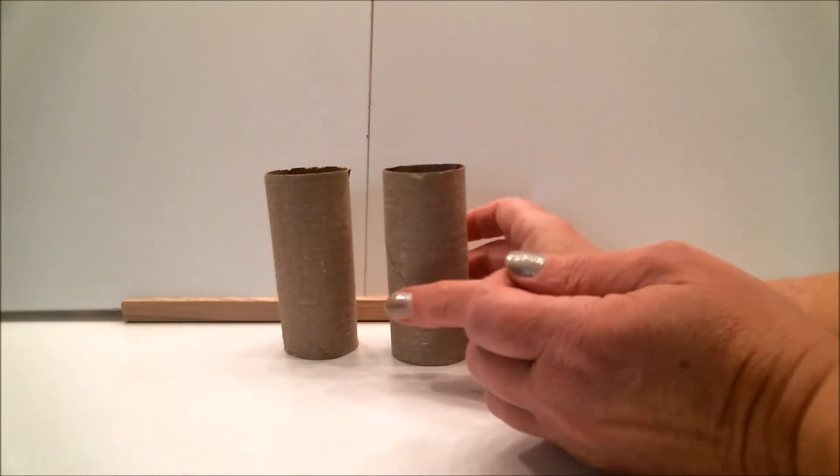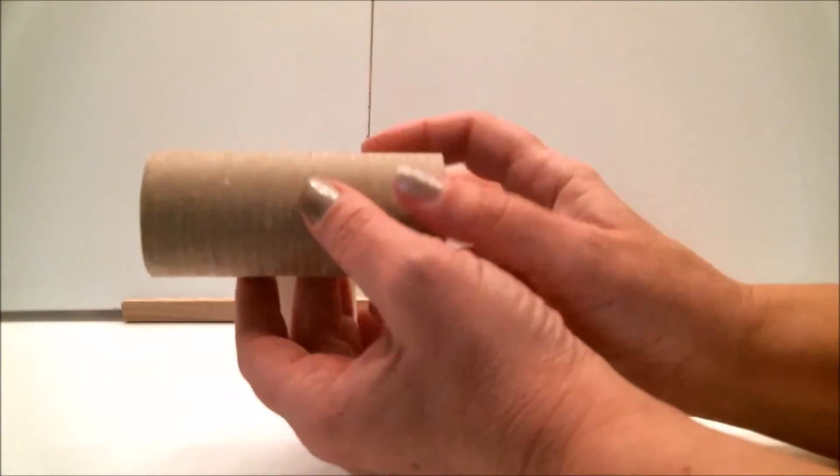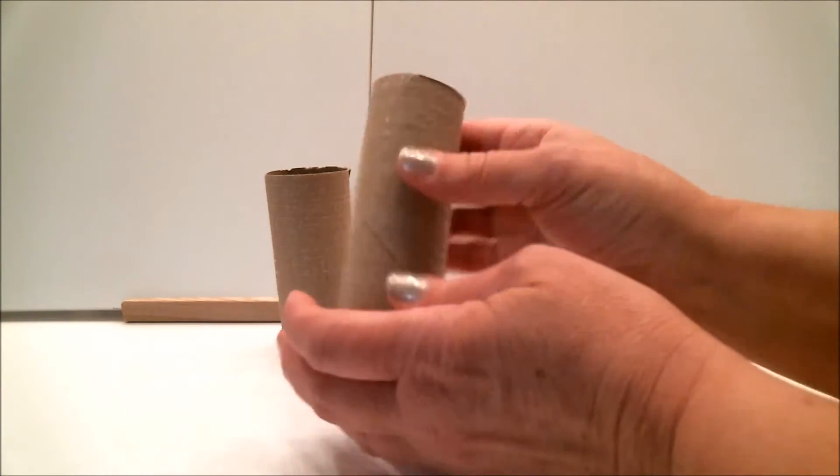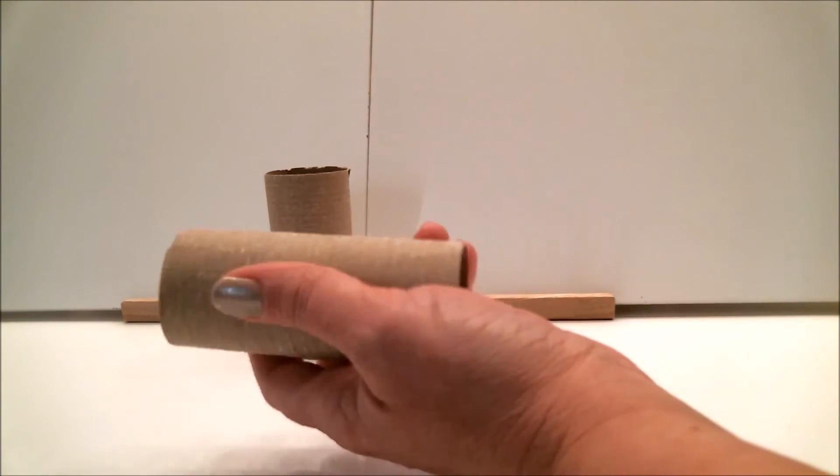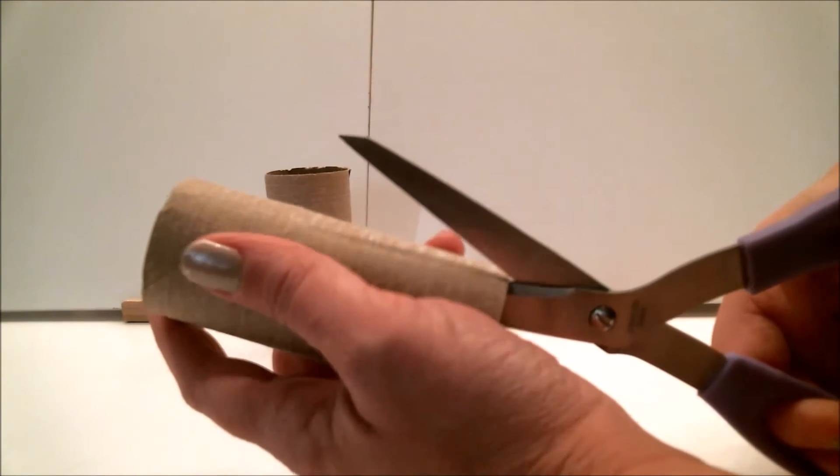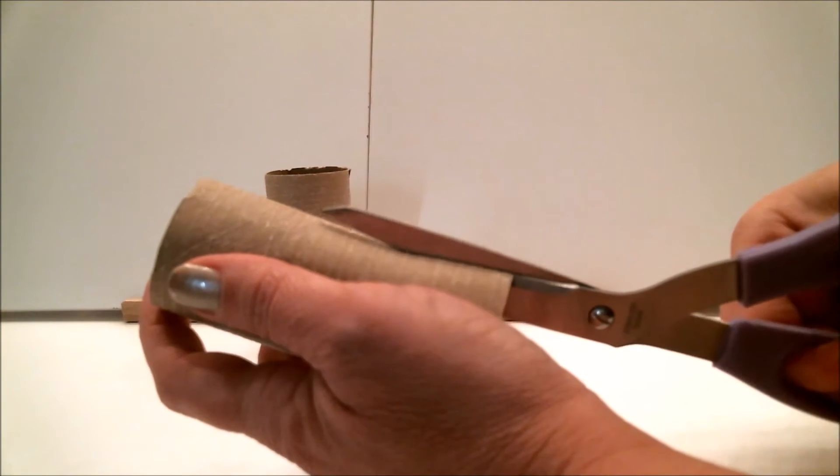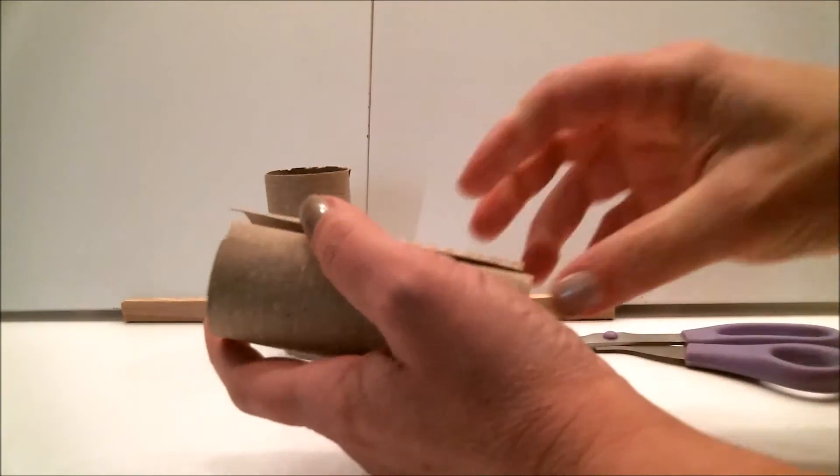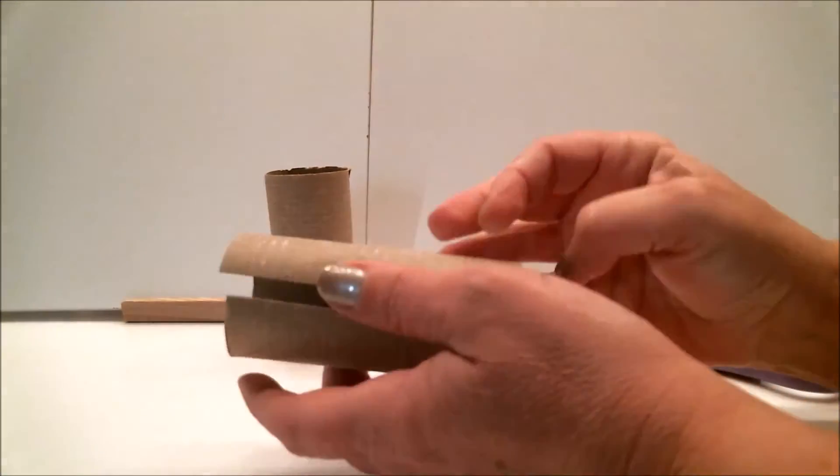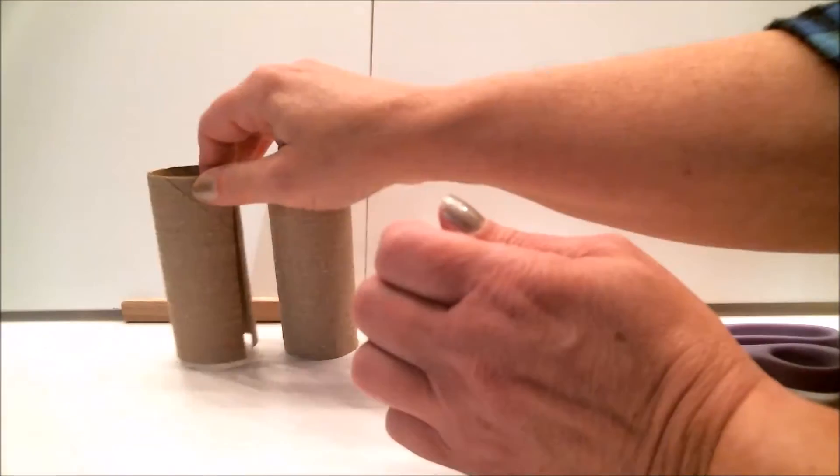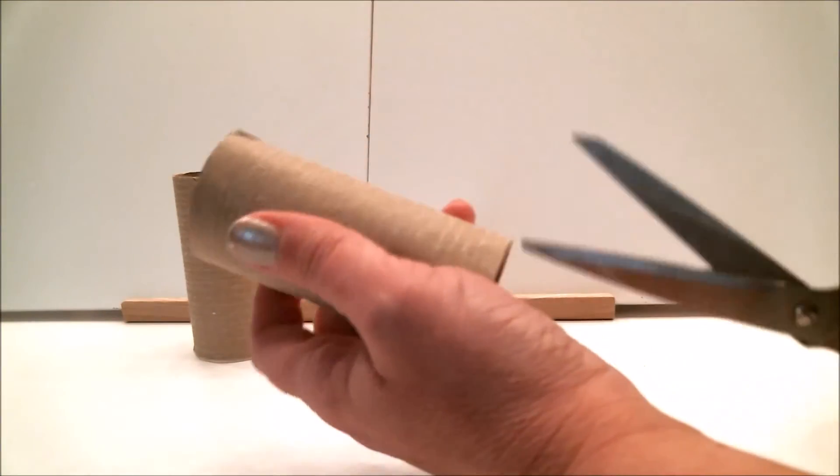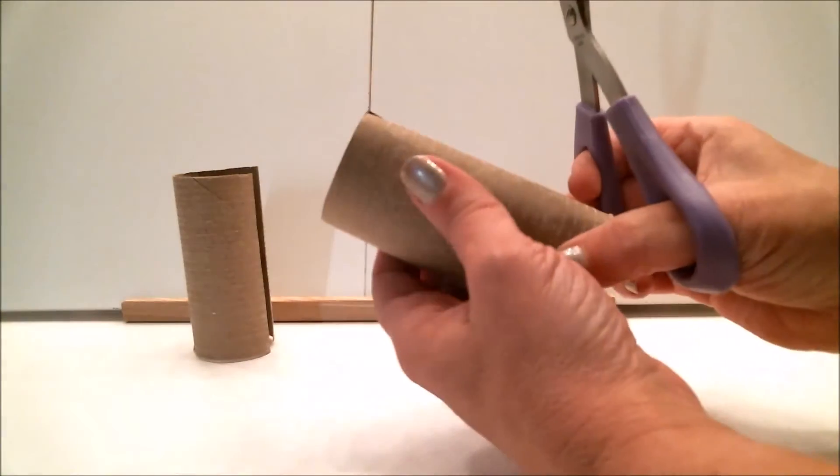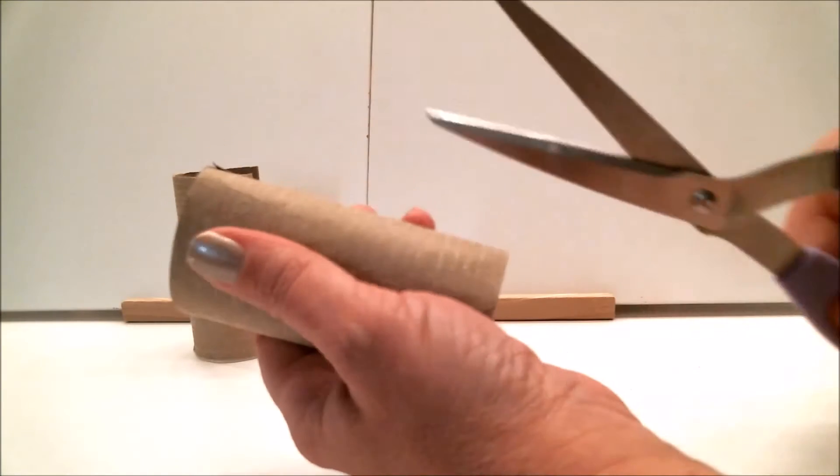To start off, you're going to need two toilet paper rolls, just your basic toilet paper roll. Mine are kind of brown, some people's are white. And what you're going to do is you're going to take one of them and you're going to cut a nice straight cut all the way across. Just like that. Now we're going to set this one aside and we're going to grab the next one.